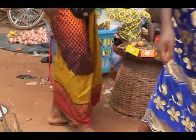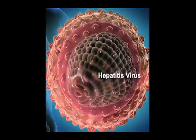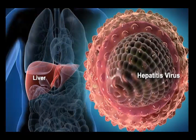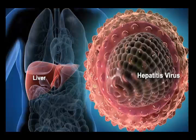Dark coloured urine and jaundice are common symptoms. Chronic hepatitis, cirrhosis, liver failure and liver cancer can occur in people with chronic infection. There is no treatment for acute hepatitis B infection. In chronic conditions, the disease can sometimes be stopped with medication.